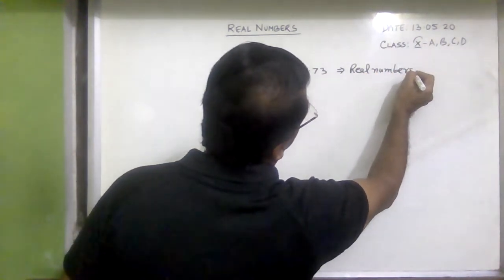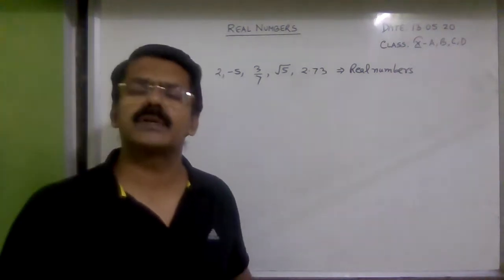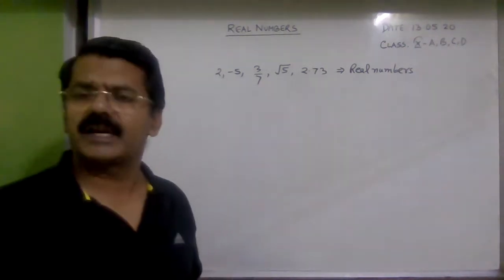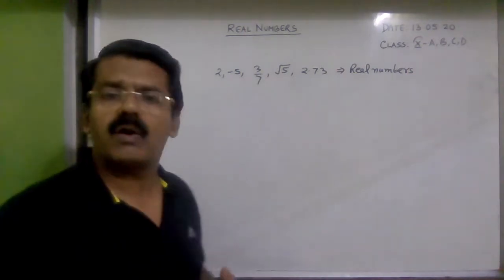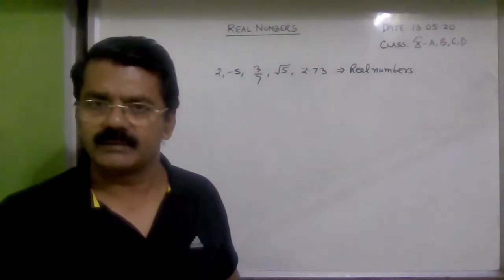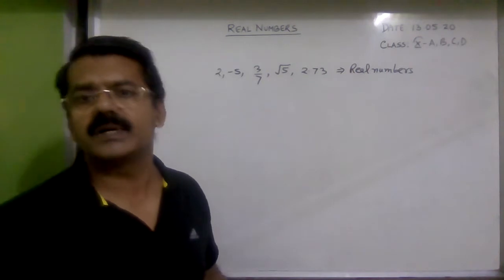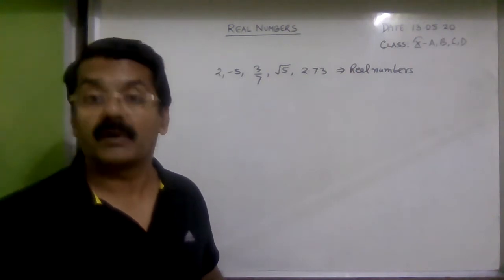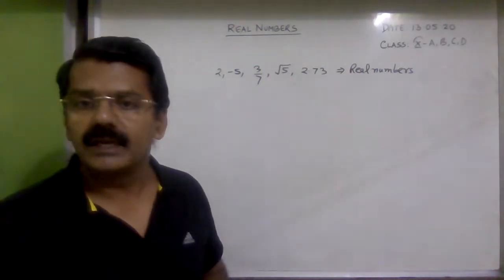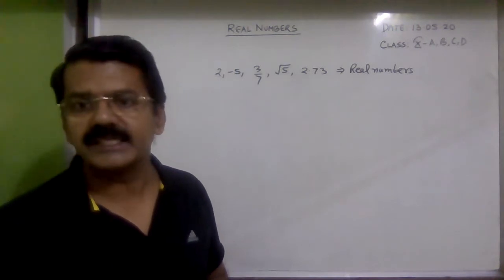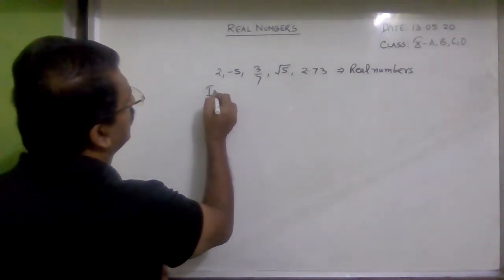All the rational numbers, irrational numbers, positive, negative, fractional, decimal — all numbers are real numbers. Now, what are the numbers which are not real? The numbers which are not real are called imaginary numbers.